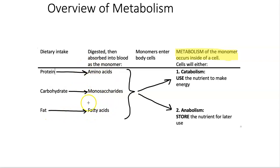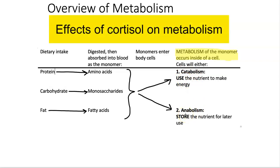These individual building blocks or monomers enter into our blood, and from there, these nutrients enter into our cells. This is where metabolism takes place — basically like a two-way street. When a nutrient enters into our cell, we can either use it for energy or store it. Under the effects of cortisol, cortisol has a glucose-sparing effect.